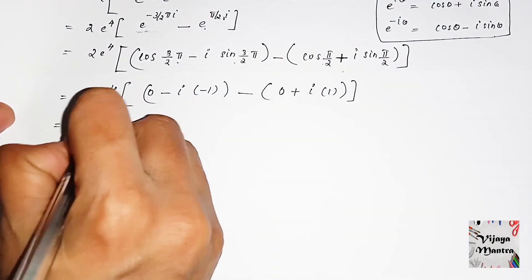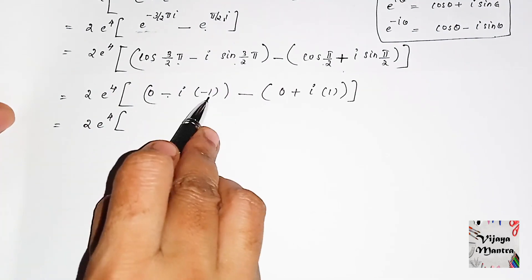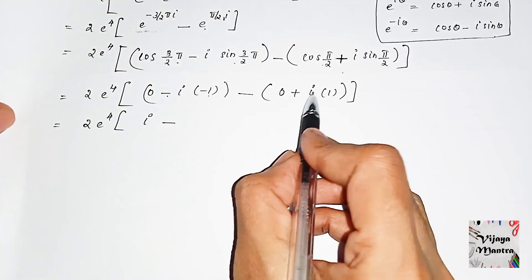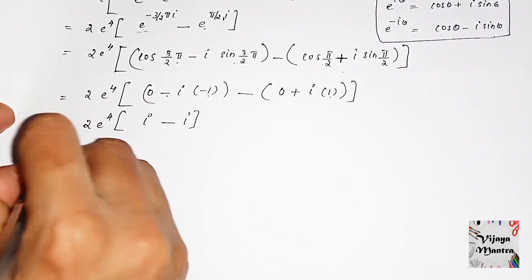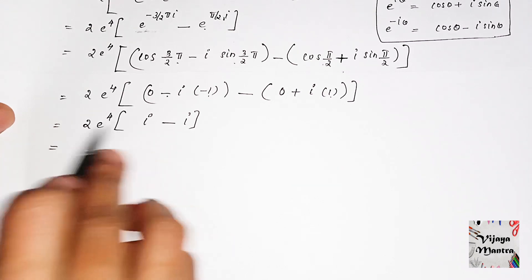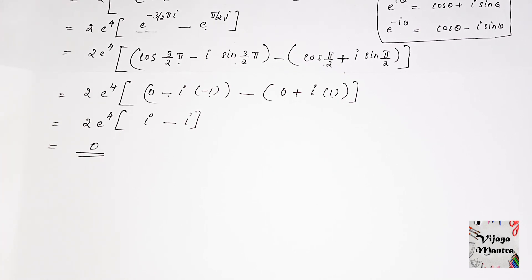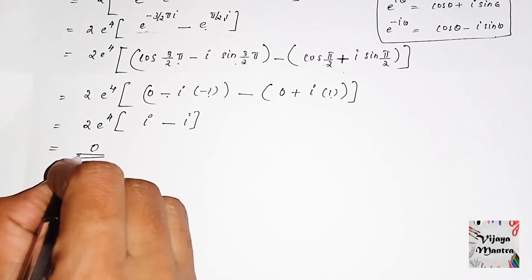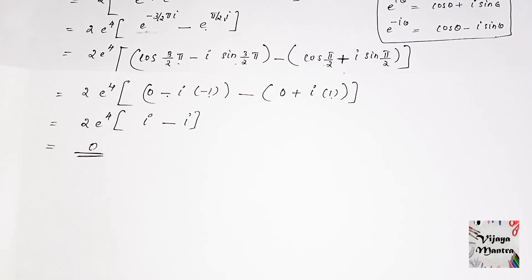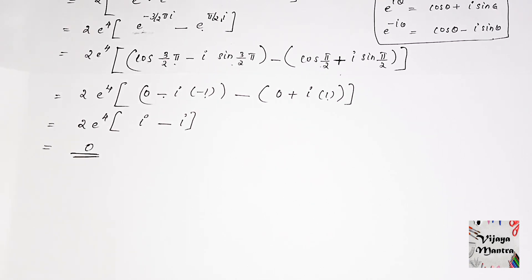Inside the bracket: (−i·(−1)) − (i·1) = i − i = 0. So 2·e^4 times 0 equals 0. Therefore the integral from (8+πi) to (8−3πi) of e^(z/2) dz equals 0. This completes the first and second evaluation methods.